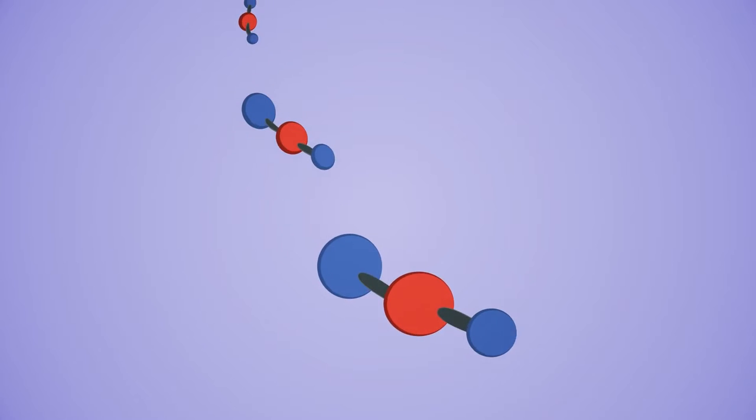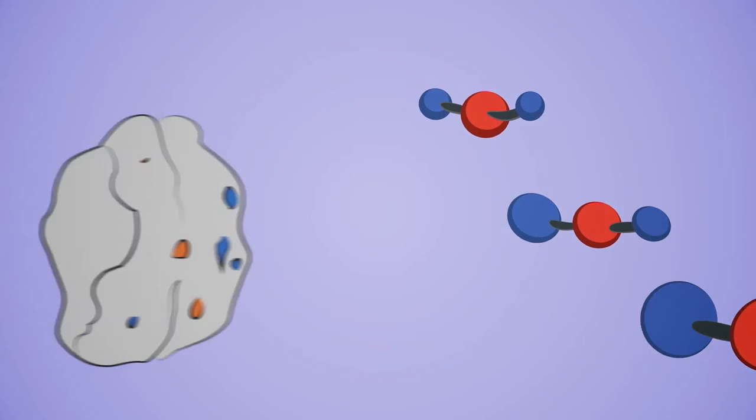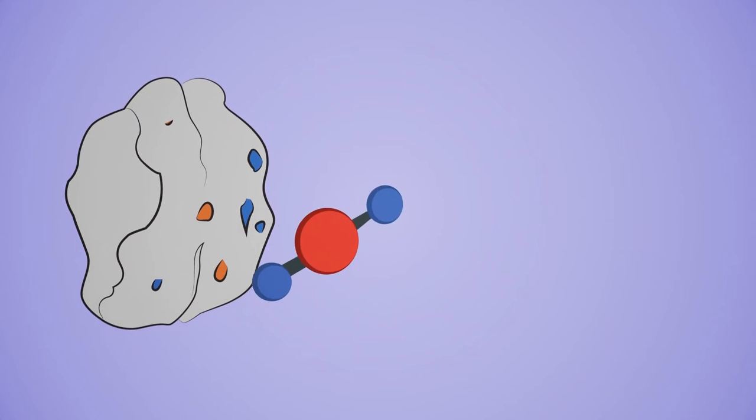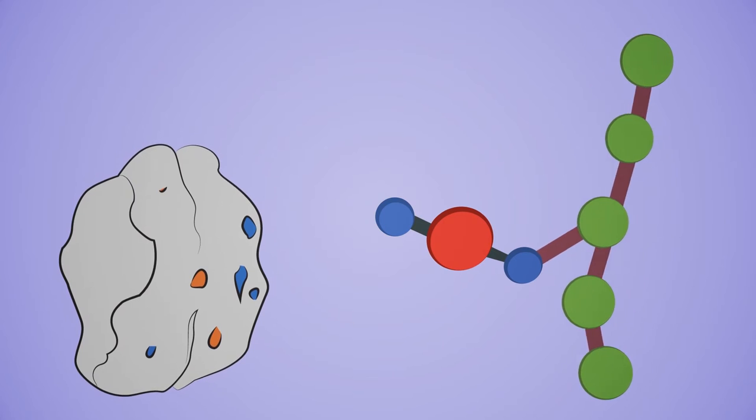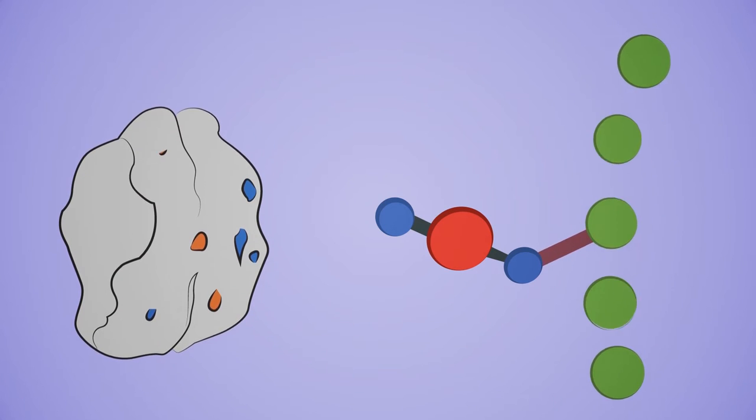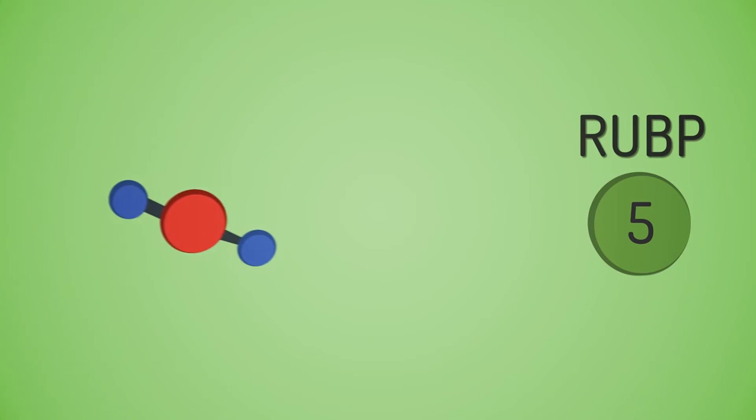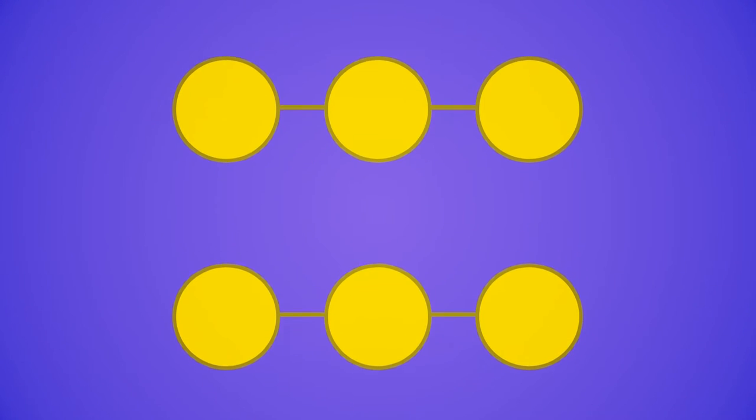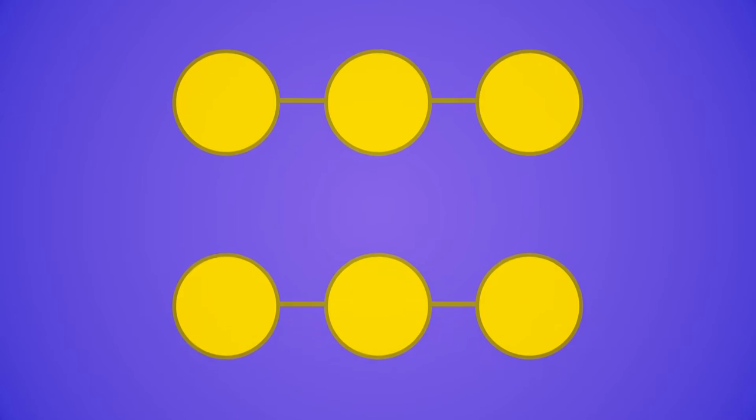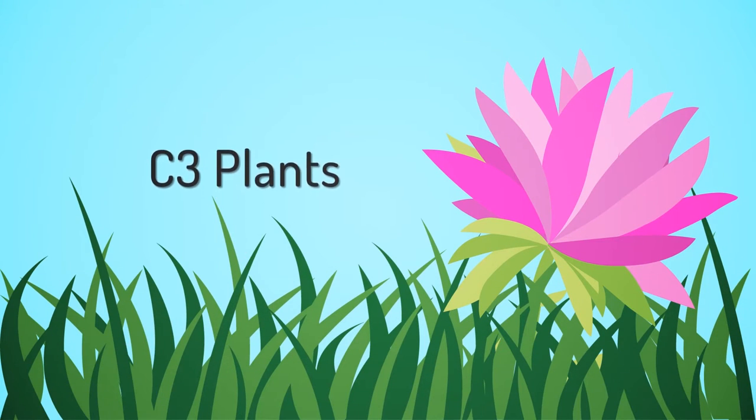After CO2 enters a plant, the enzyme rubisco attaches CO2 to a five-carbon molecule known as ribulose bisphosphate, or RUBP. The reaction between CO2 and RUBP produces an unstable intermediate that splits into two molecules of three-phosphoglycerate. The plants we observe that use this method of carbon fixation are termed C3 plants.